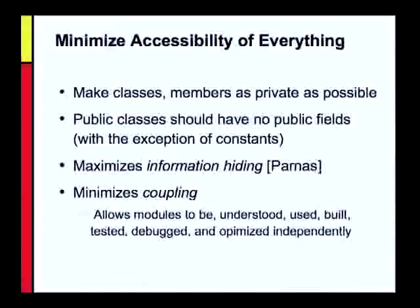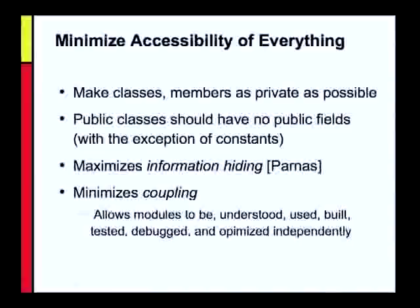You should minimize the accessibility of everything — make your classes, members, and fields as private as possible. Public classes should have no public fields, with the exception of constants. This maximizes information hiding — a concept from Parnas — and minimizes coupling between APIs. If things are hidden behind intermodular boundaries, they can be changed freely, allowing modules to be understood, used, built, optimized, debugged, and tested individually and in parallel. If APIs expose everything and modules mess around with each other, there's very little you can do to any module without affecting a whole slew of others around it.